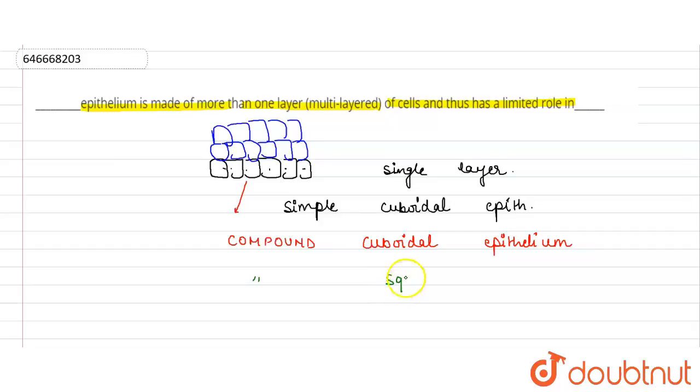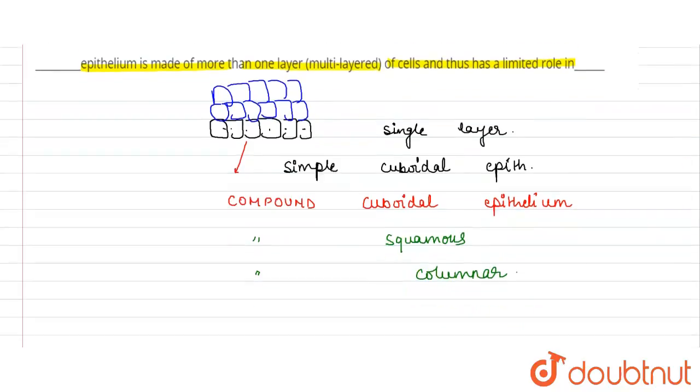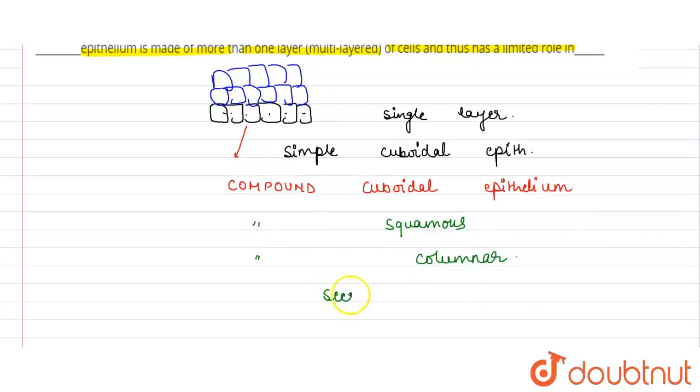It can be compound squamous also. If the multilayers are present, it can be compound columnar also. Its function is limited only till the secretions.